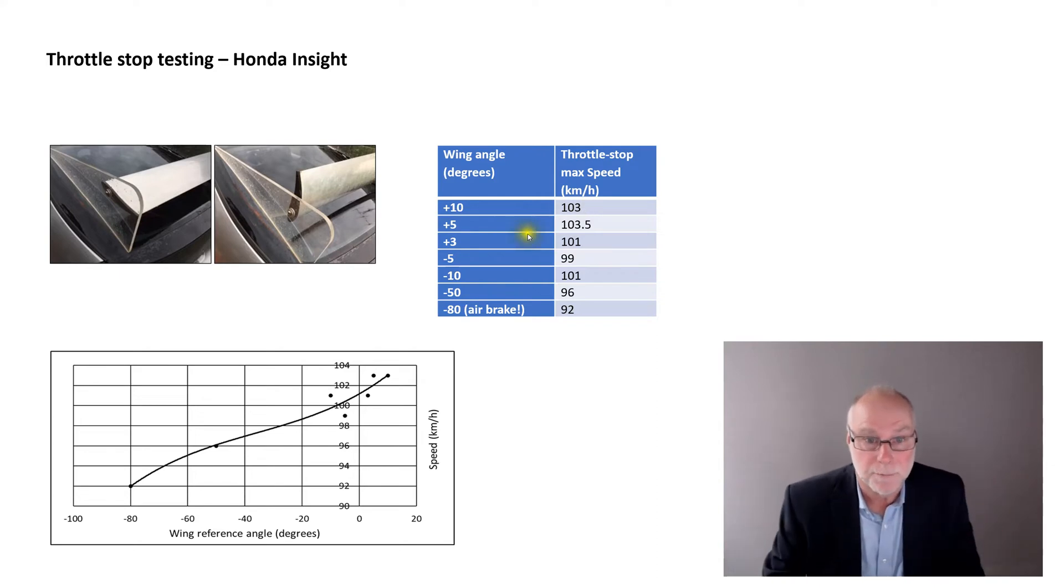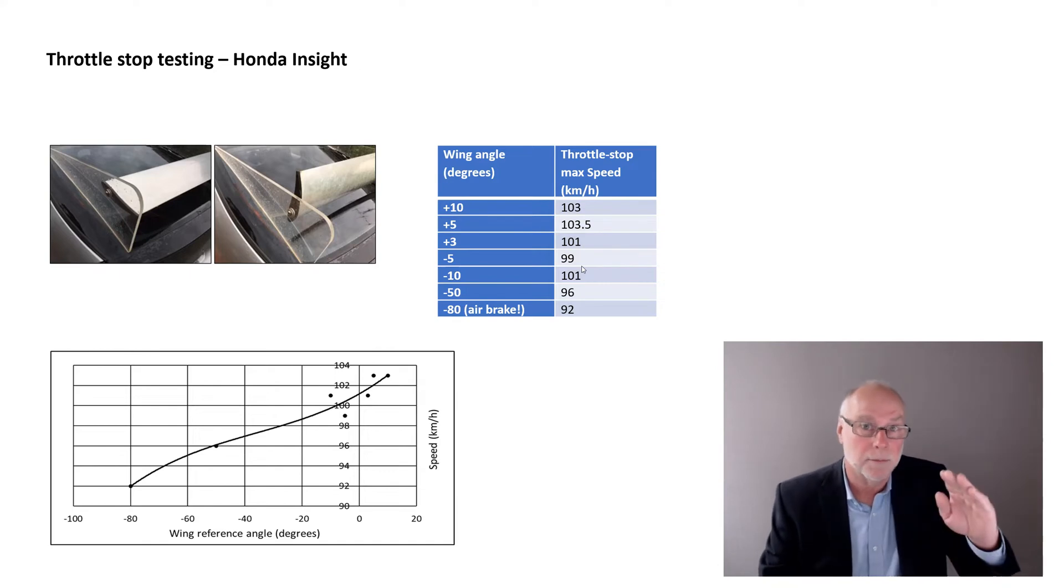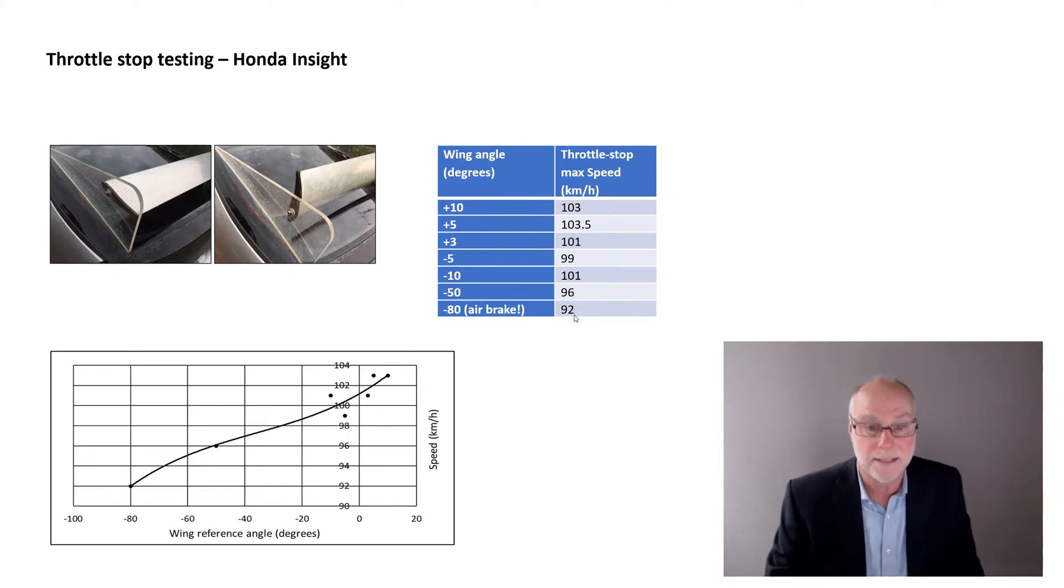And then I've got the maximum speed that was achieved in throttle stop form. Remember that the power of the engine is limited. So plus 10 degrees, 103 km an hour, plus 5, 103.5, plus 3, 101, minus 5, 99. Okay, we're starting to get drag. Minus 10, 101, minus 50, 96. So we can see there that we've got a big change, a big decrease in speed. And then nearly at 80 degrees, minus 80, nearly at 90 degrees, minus 80 degrees down to 92.